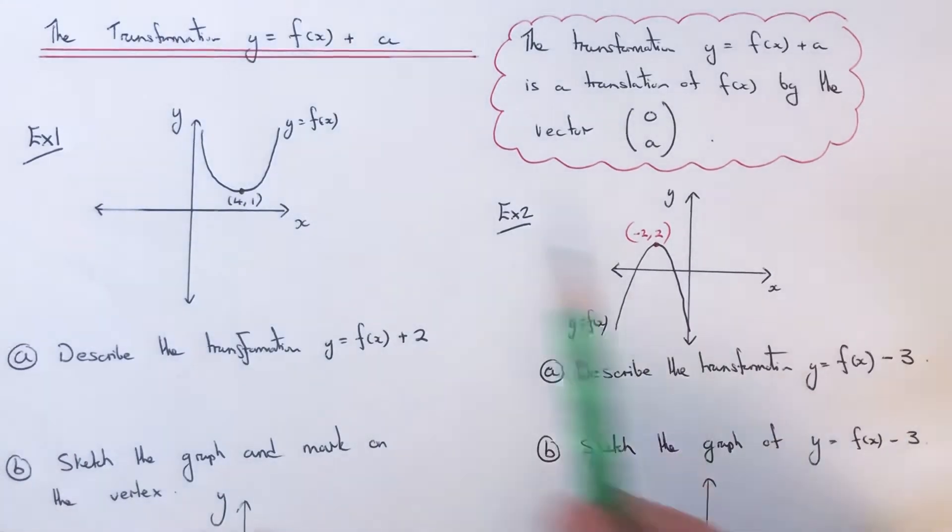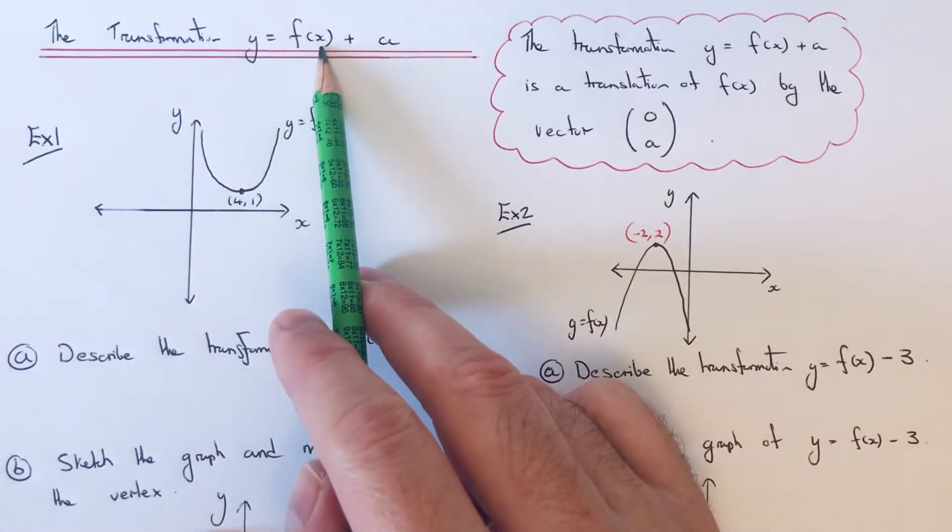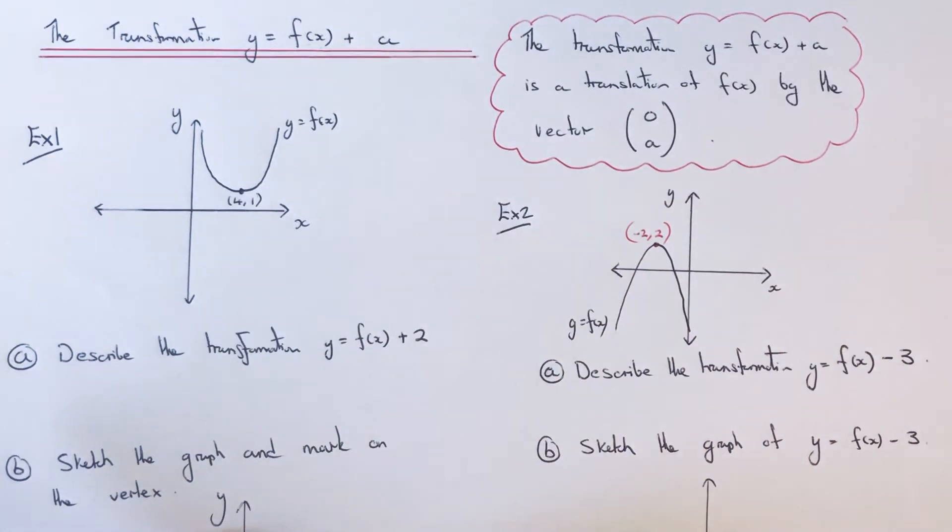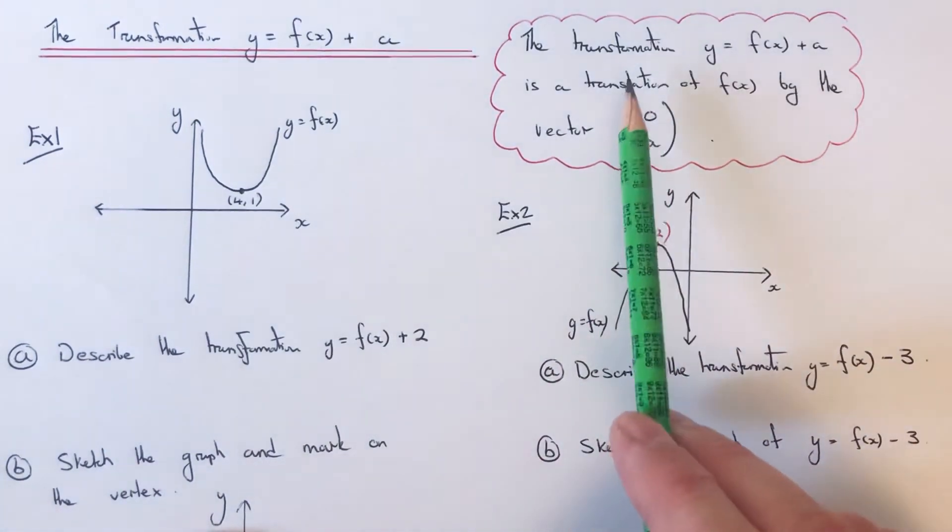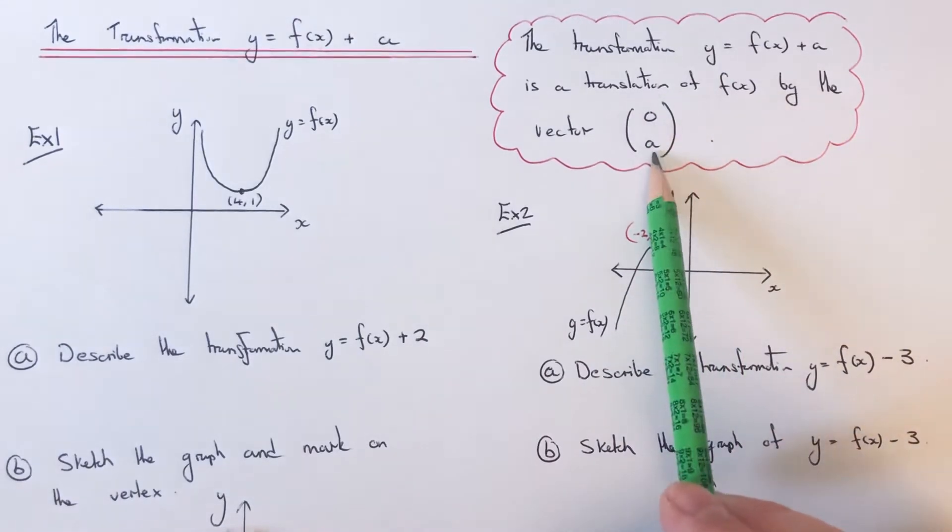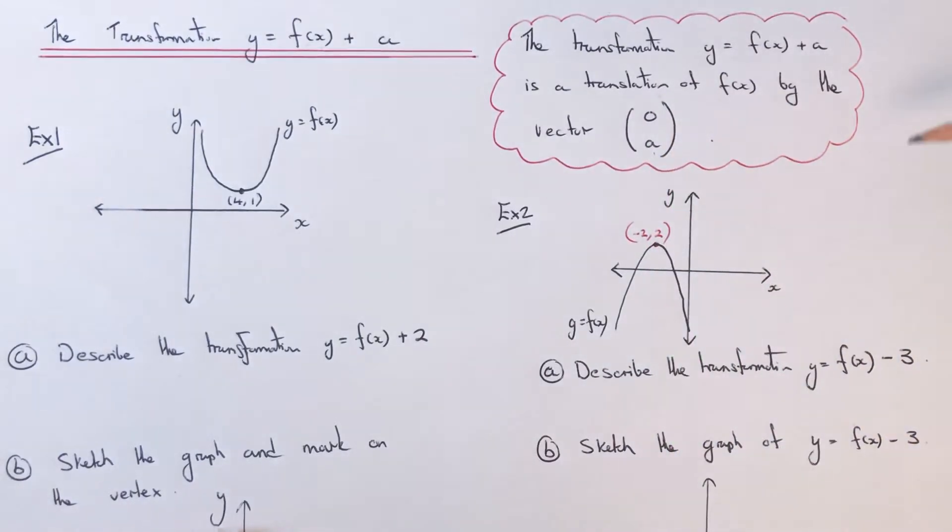Today I'm going to talk about the transformation y equals f of x plus a on the outside, and this is basically a translation by the vector 0a. So you're just moving the graph up or down by a.